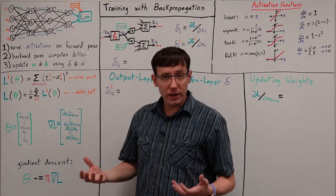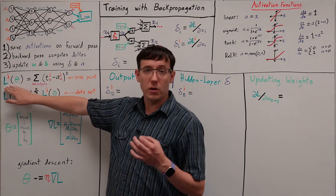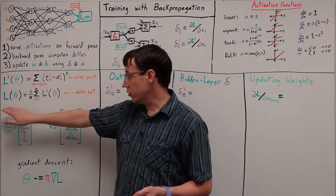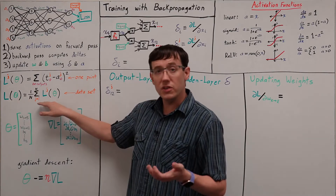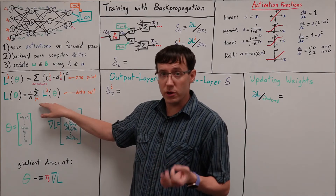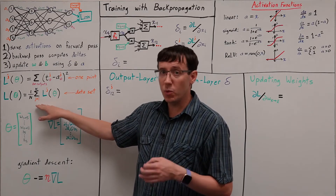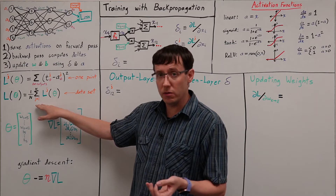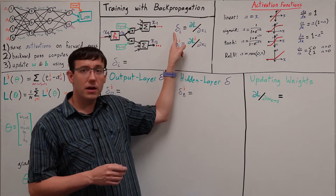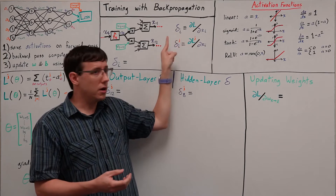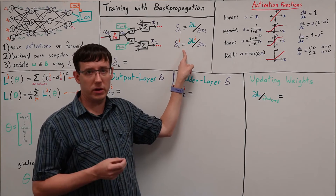Since our loss consists of a sum over many data points, it will also help to think about the partial derivative of the loss on an individual data point. If we think about the relationship between the partial derivative of the loss on one data point and the partial derivative of the loss on the whole data set, since the data set loss is an average over all of the data points, when we take a derivative of this sum, we will get a sum of derivatives, and so the derivative of the loss on the data set is just an average of the derivatives of the loss on all of the data points.